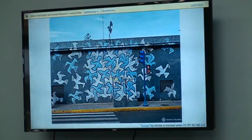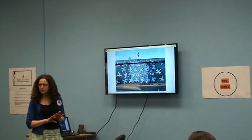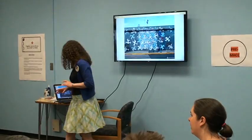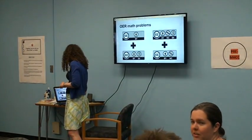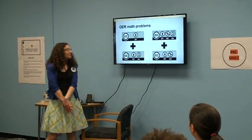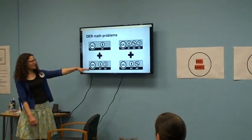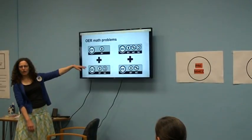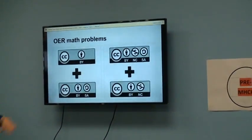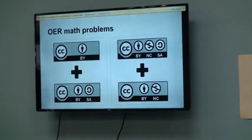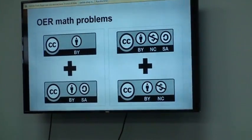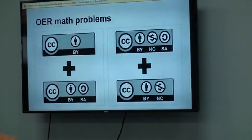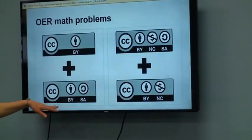The presentation covers remixing content with different kinds of licenses. If you have CC BY and CC BY ShareAlike, what license do you put on your combined content? You go with the most restrictive one, which is the ShareAlike. CC BY just requires you to give attribution; CC BY ShareAlike requires attribution and that you license it the same way going forward.